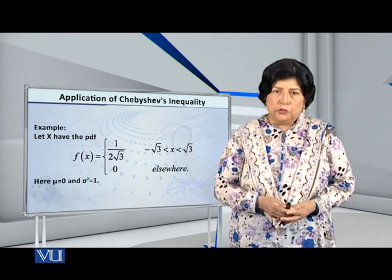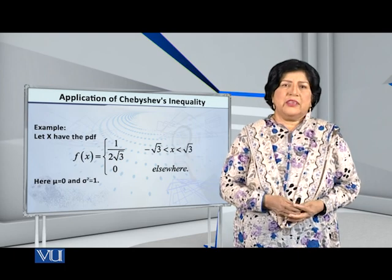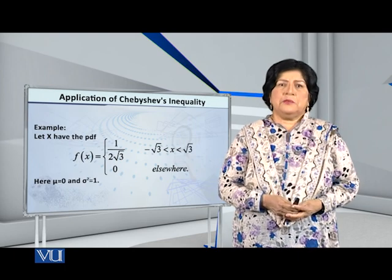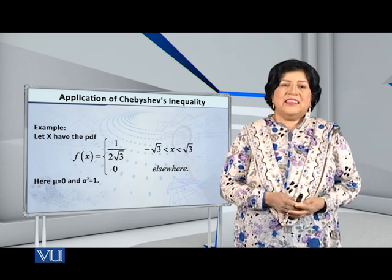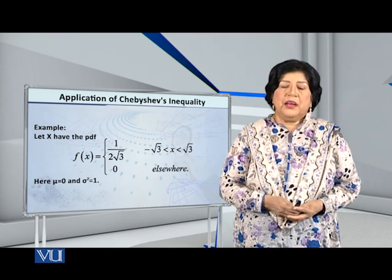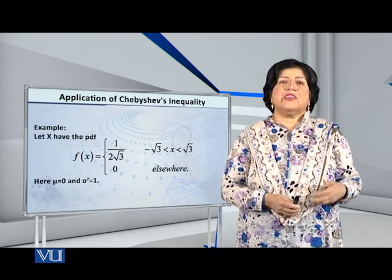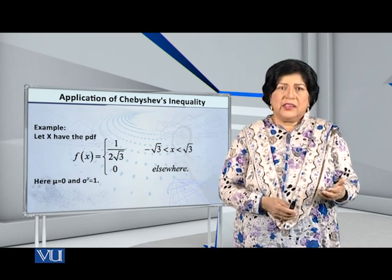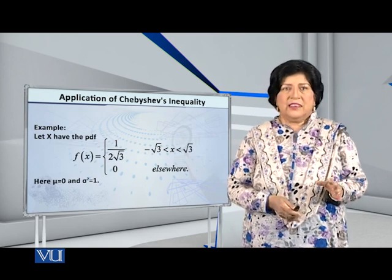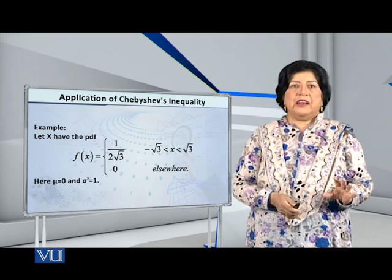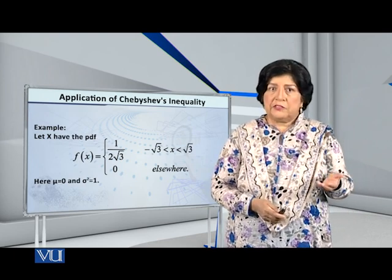For this particular distribution, if you do the normal calculations and try to find the mean and the variance, you will find that mu is equal to 0 and sigma squared, that is the variance, is equal to 1. So we have the conditions by which we can apply Chebyshev's inequality.